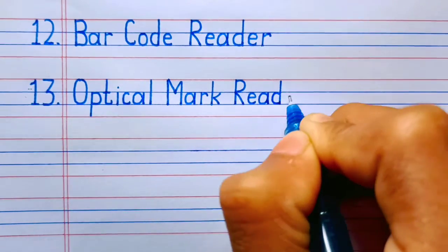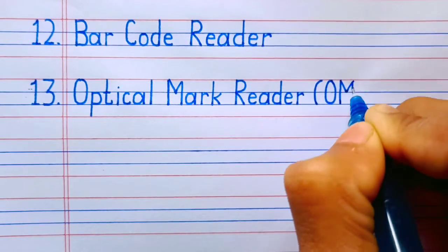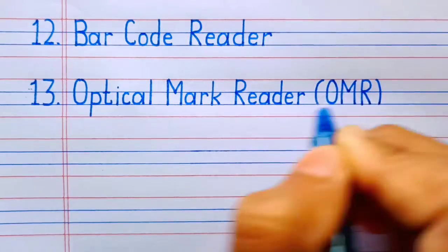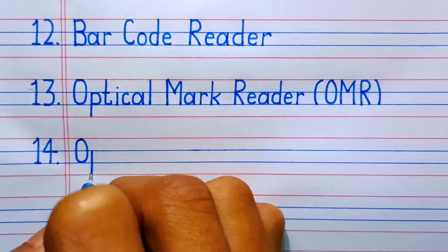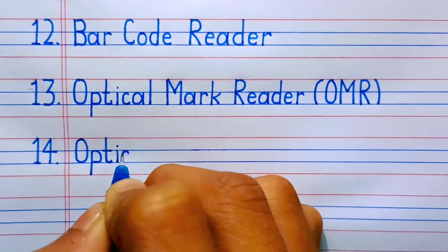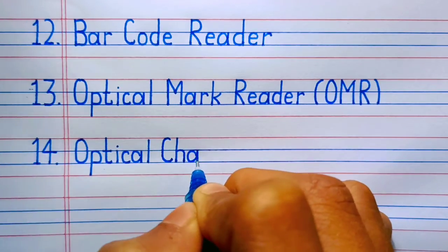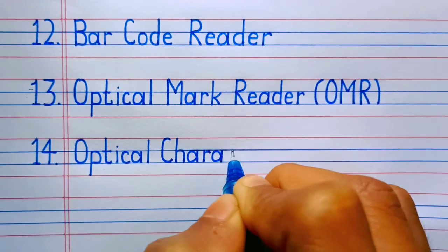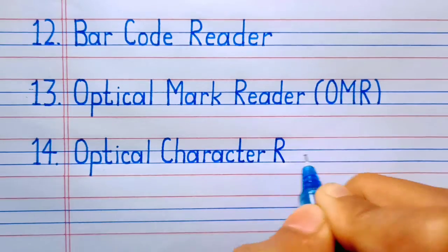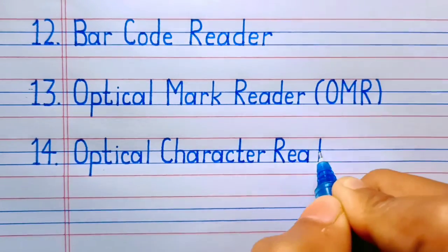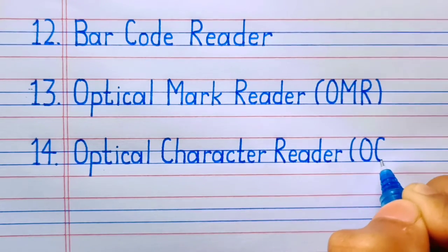Number thirteen: Optical Mark Reader, in short form OMR. Number fourteen: Optical Character Reader, in short form OCR.